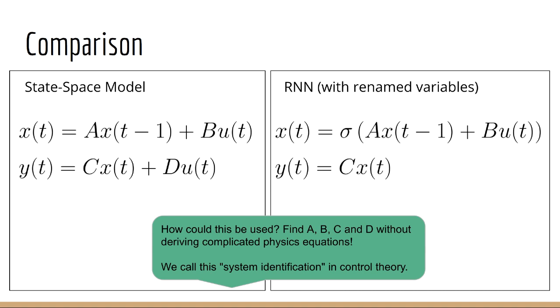As such, we can conclude that the RNN is just a non-linear generalization of the state-space model. In addition, using the techniques of machine learning, this gives us another way to learn the matrices A, B, C, and D without having to derive physics equations ourselves.